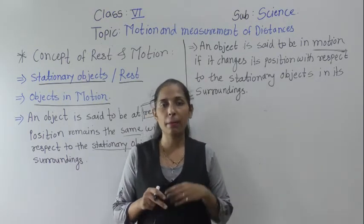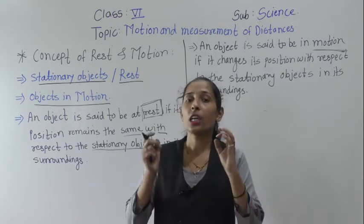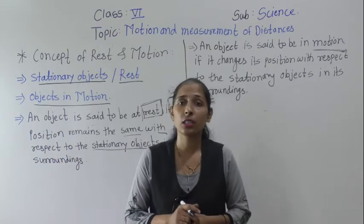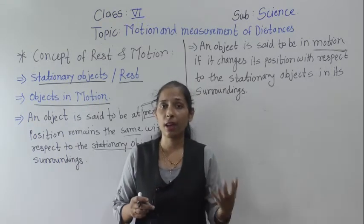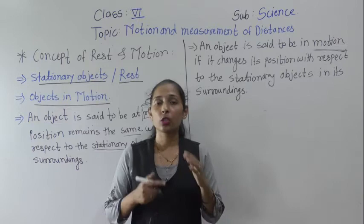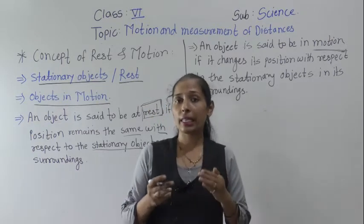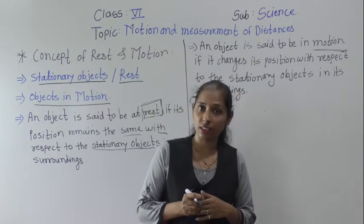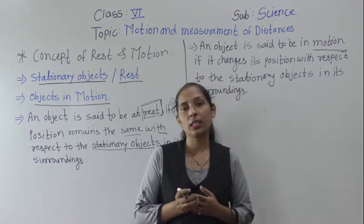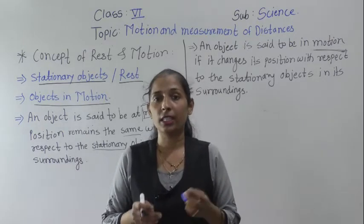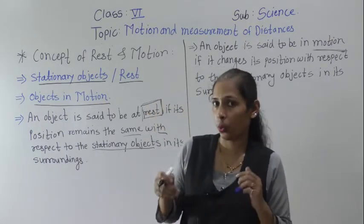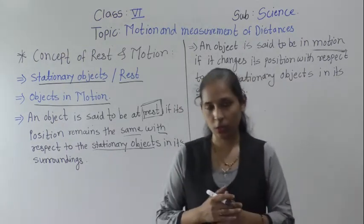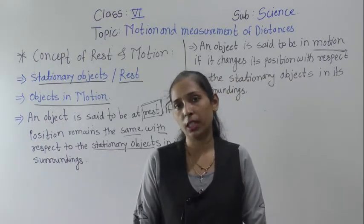We can exactly determine whether a change in position has happened or not by measuring the distance. Measurement also allows us to find out whether the motion is fast or slow.